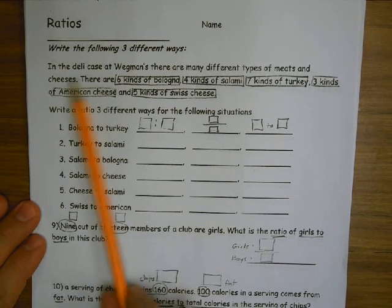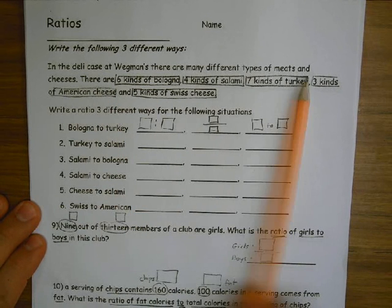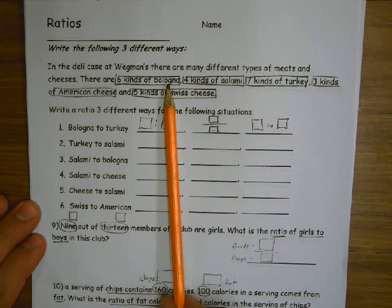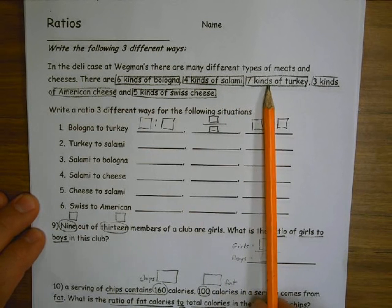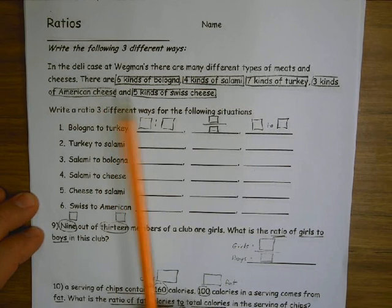In the deli case at Wegmans, there are many different types of meats and cheeses. There are six kinds of bologna, four kinds of salami, seven kinds of turkey, three kinds of American cheese, and five kinds of Swiss cheese.